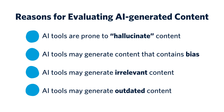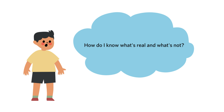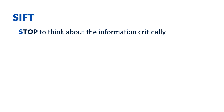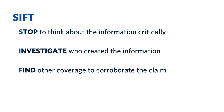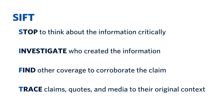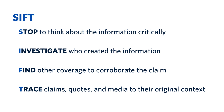For example, as of March 2024, the free version of ChatGPT is modeled on content only up to 2021 to 2022. Ash is now going to decide to learn how to evaluate information from Gen AI. Ash can use the SIFT acronym to remember how to evaluate information from AI: Stop to think about the information critically; Investigate who created the information; Find other coverage to corroborate the claim; and Trace claims, quotes, and media to their original context. You can use SIFT too, the next time you use a generative AI tool. Let's look more closely at how to apply each step.